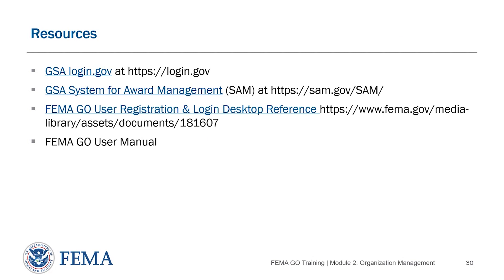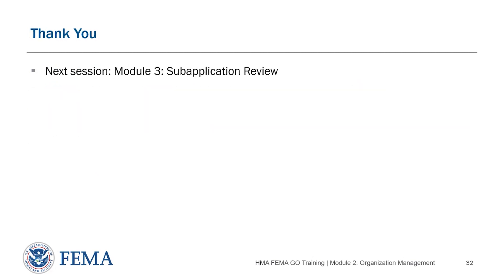Here are some resources for a refresher on what we've covered. If you go to gsaslogin.gov, you can create your login account for using the System for Award Management. There's also a link to sam.gov where you'll need an account, which your organization probably already has if you've applied for federal assistance before. Finally, there's a link to the FEMA Go user registration and login desktop reference, also available through FEMA.gov/BRIC, and you can also refer to the FEMA Go user manual from the same link. Thank you for joining me for Module 2 — please join me for Module 3, Sub-Application Review.